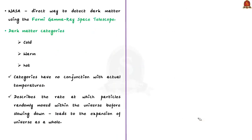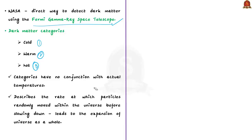The one good fact we can summarize about dark matter is that it can be classified into three main categories: cold, warm and hot. These categories have no connection with actual temperatures. Instead, they describe the rate at which particles randomly move within the universe before slowing down. Such movement of particles leads to the expansion of the universe as a whole. Based on particle movement, scientists have classified dark matter into cold, warm and hot.